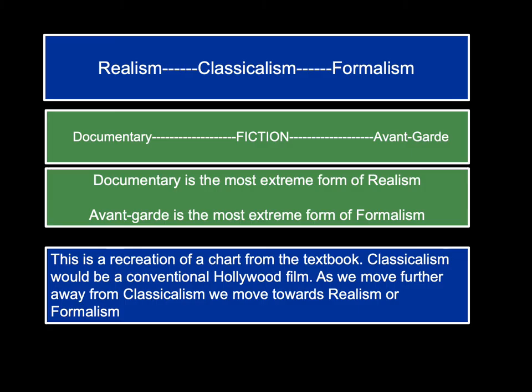This is a recreation of a chart from the textbook. In the middle we have classicalism, and underneath it, fiction. Classicalism would be a conventional Hollywood film. As we move further away from classicalism, we move towards realism or formalism. Documentary is the most extreme form of realism, and avant-garde is the most extreme form of formalism.